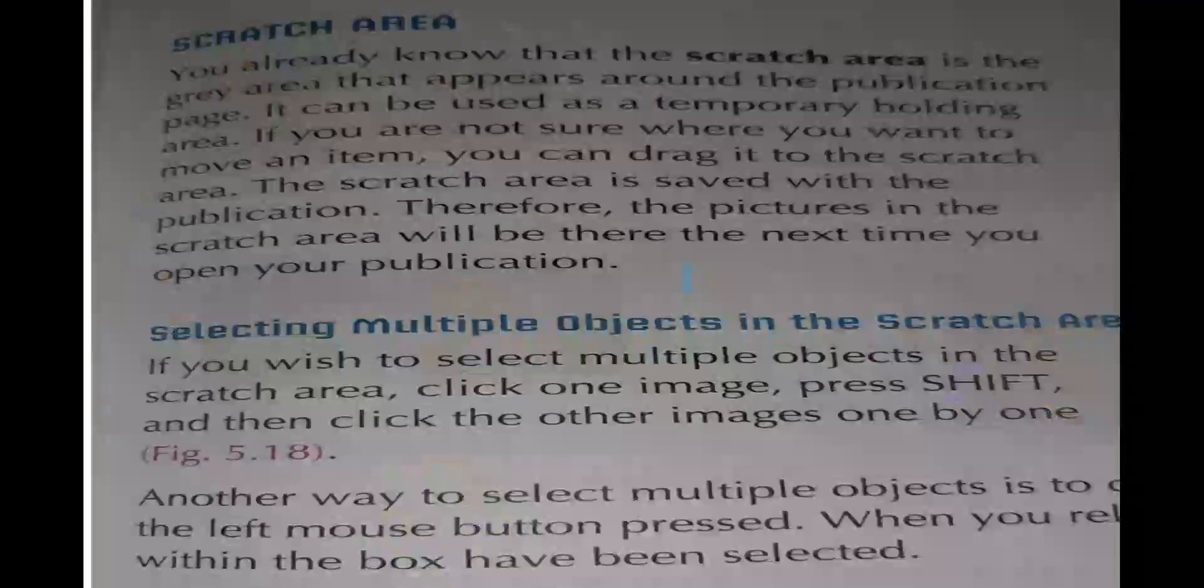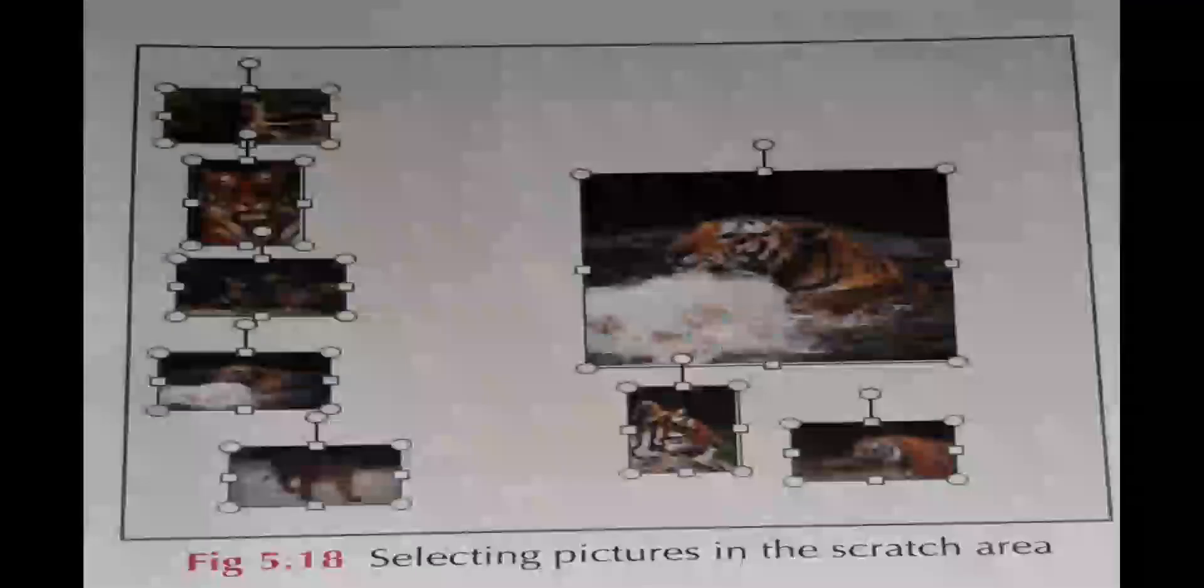Another way to select multiple objects is to draw a box around them with your mouse, keeping the left mouse button pressed. When you release the button, you will see that all the images within the box have been selected, as shown in picture 5.18. Then you have to select the picture in the scratch area.